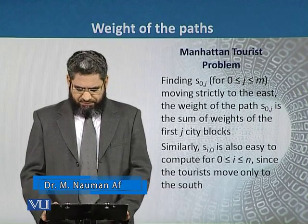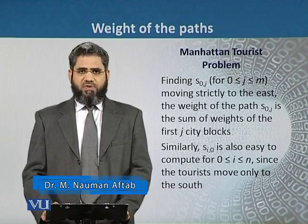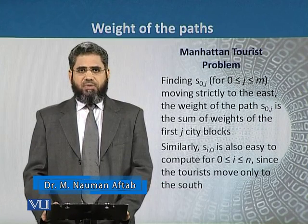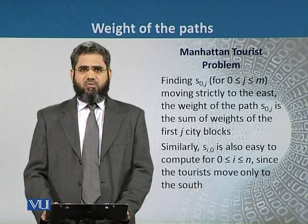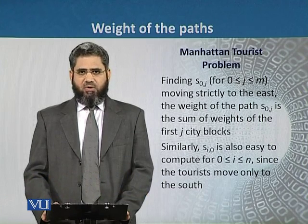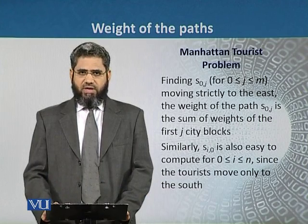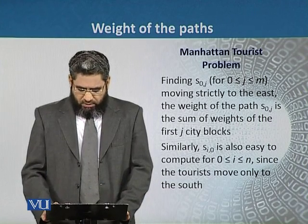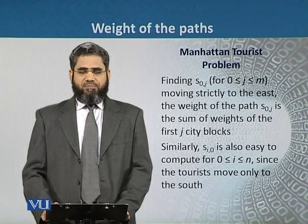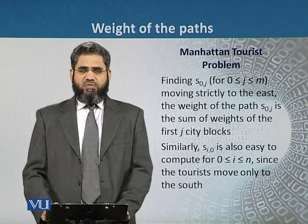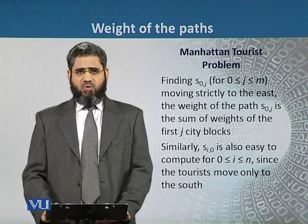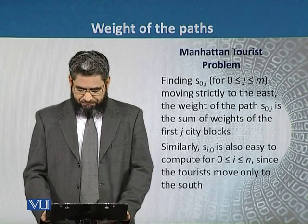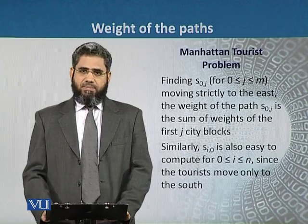When the tourist moves in the east direction, the value of S[0][j] will be the sum of all the values of the grid's edges. In the first row we will find the value of j city blocks. Similarly, we can also find the value of S[0][j] in the same manner.